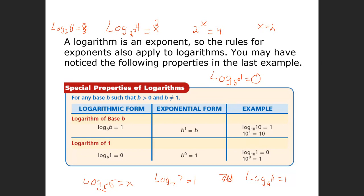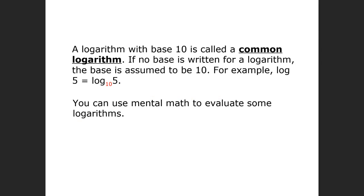There are a lot more properties for logarithms, but those are some of the easy ones that come in handy a lot. A logarithm with base 10 is called a common logarithm. So log base 10 of 100 equals 2. But if it's base 10, we don't have to write in the base — we can just write log of 100 is equal to 2. If there's no base on a logarithm, it is assumed to be 10.